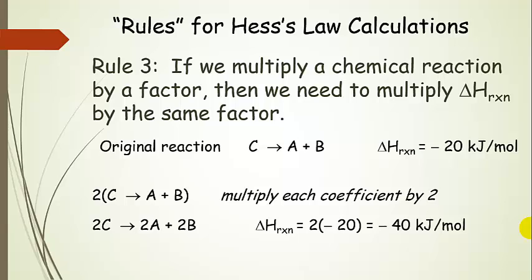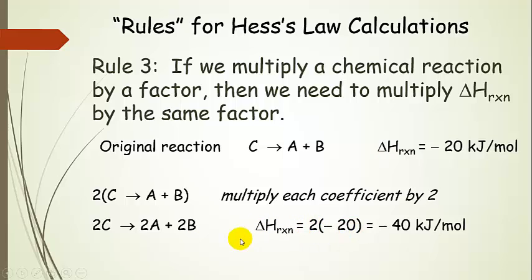Here's another new rule: if we multiply or divide a chemical reaction by a factor, then we need to multiply delta H reaction by the same factor. Here's an original reaction — C going to A plus B — and this is negative 20 kilojoules per mole. Suppose we want to multiply this reaction by 2. That's the same as multiplying each coefficient by 2 — we distribute it. So now we have 2C goes to 2A plus 2B, and we multiply delta H reaction by 2 also, because it does matter how much there is. This is twice as much, so twice as much heat is released.